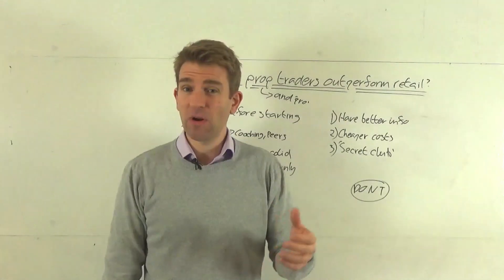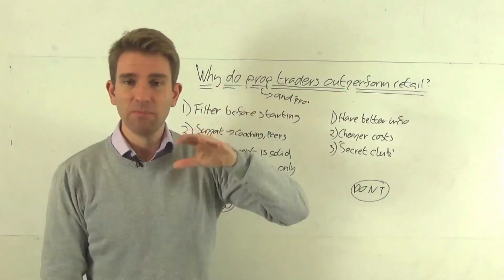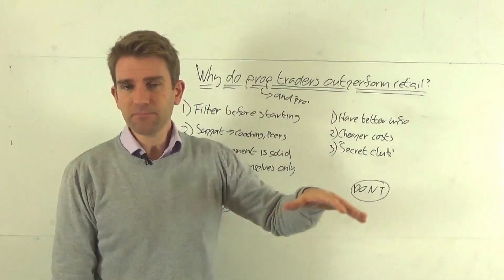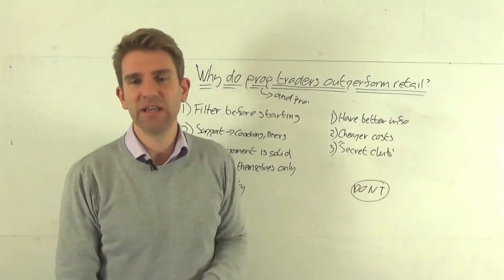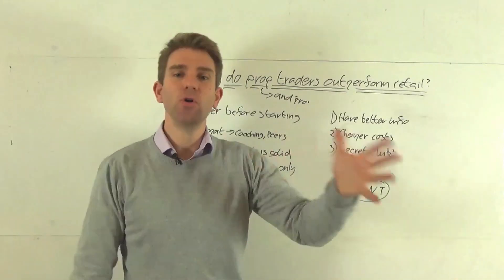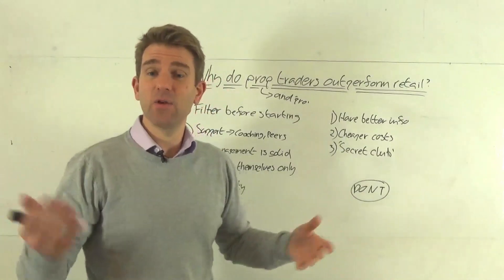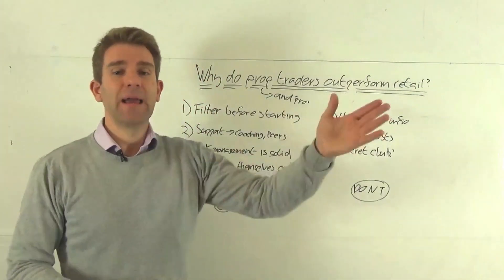Number five is accountability. Another big one, I think, if you're a pro trader, you're accountable to your risk manager, your trading leader, however it's structured in the company, but you have accountability. You can't just go in, lose money, not show up, not do this, not do that, not put in the work. Because eventually, they'll say, hey, you're not the man for the job, out the door.